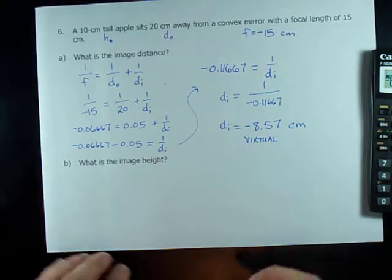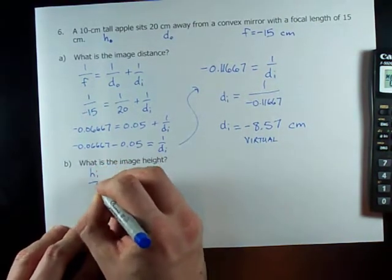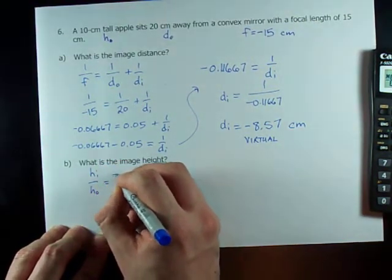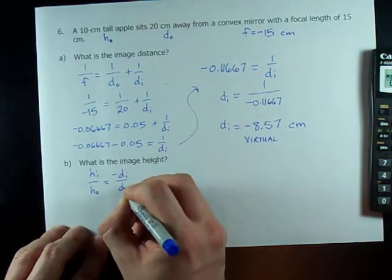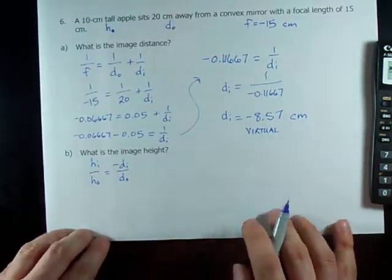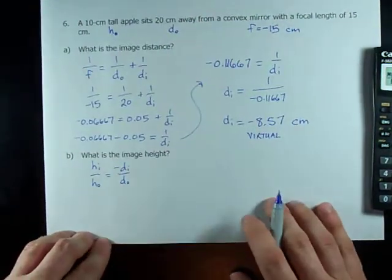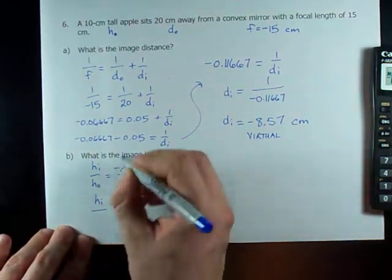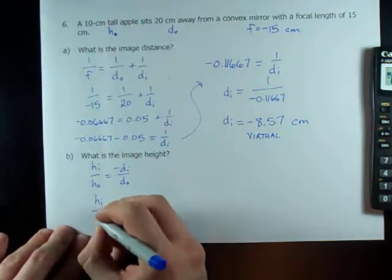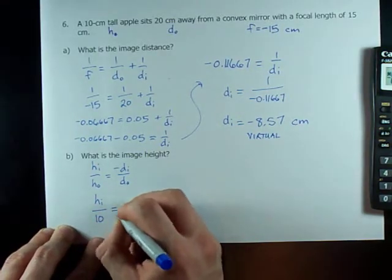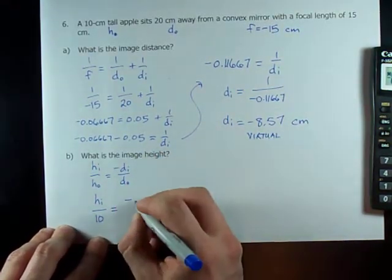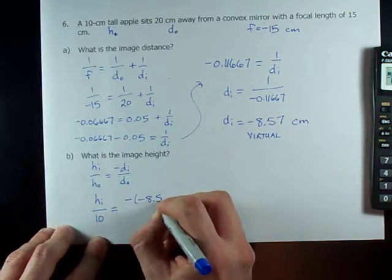Lastly, we're asked for the image height. We have the magnification equation for that. h_i over h_o equals negative d_i over d_o. All my information is here. We're asked for the image height. We're given that the height of the object is 10 centimeters.